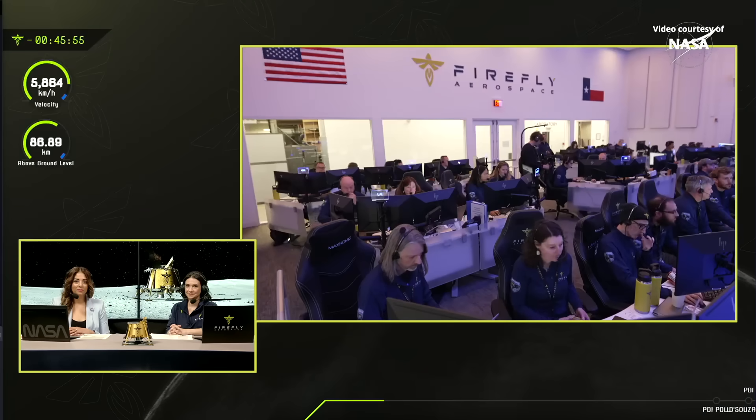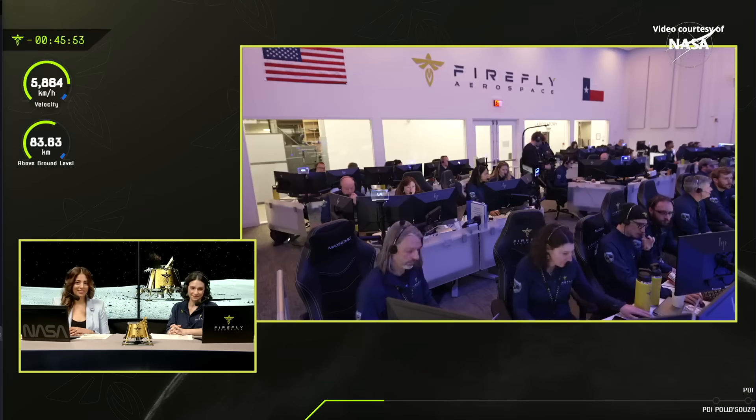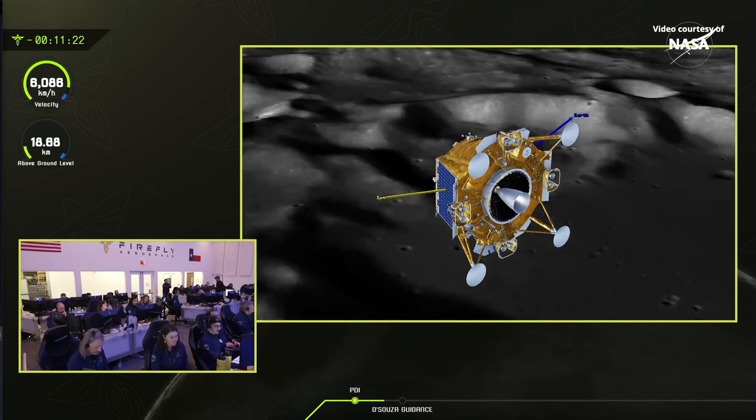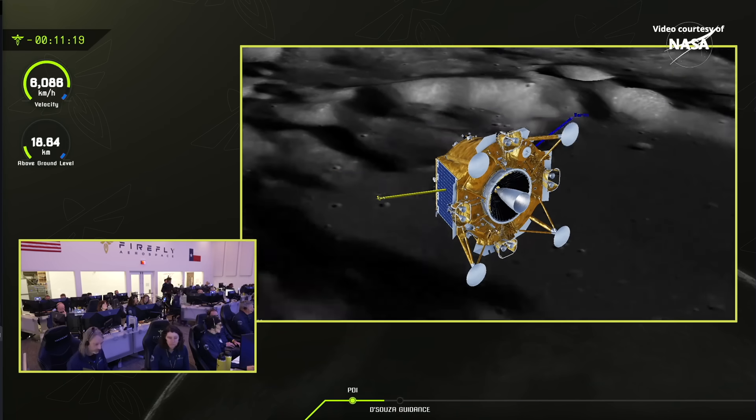Blue Ghost Lander has achieved nominal descent orbit insertion delta V for lunar landing. Five, four, three, two, one.